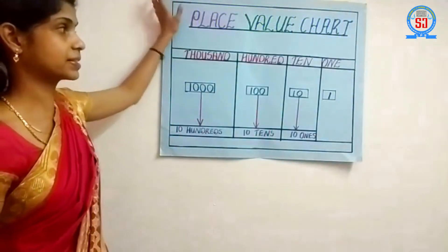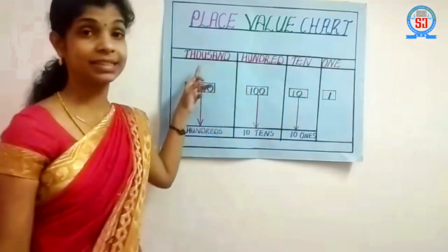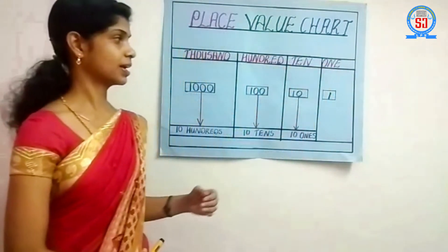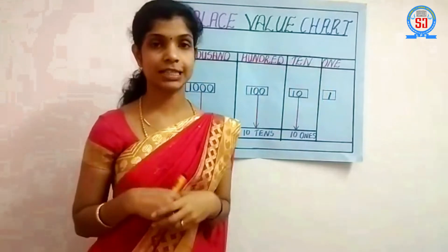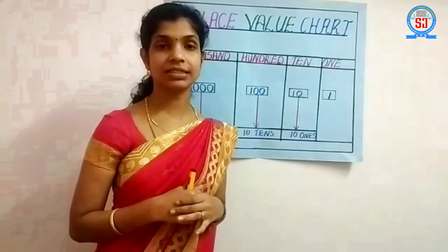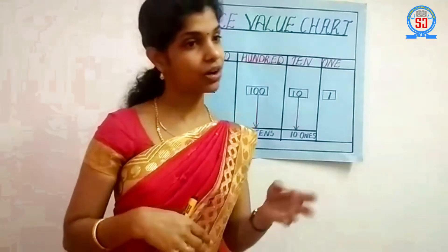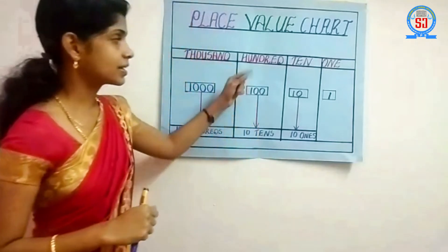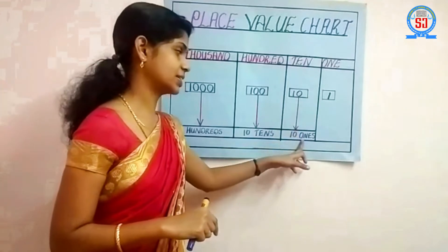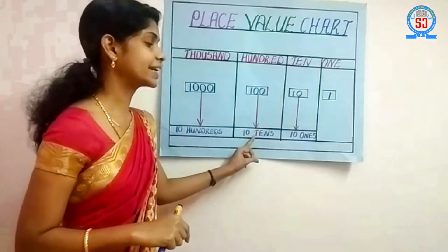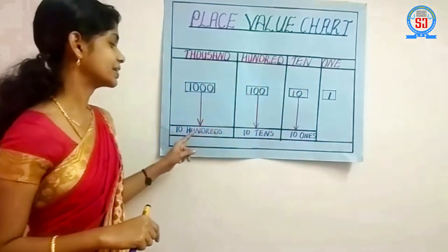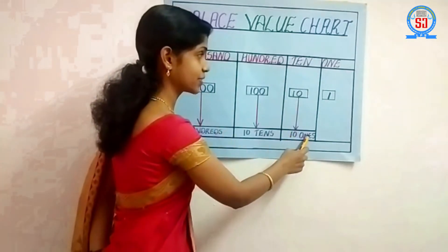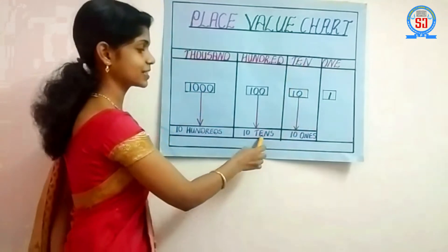Here I have written the place values: one, ten, hundred, thousand. Ten and one we read together, and they have a strong relationship between each other. Can you say one relation they have? Let's find out. Listen: ten ones make ten, ten tens make a hundred, ten hundreds make a thousand. Once more — ten ones make ten, ten tens make a hundred.